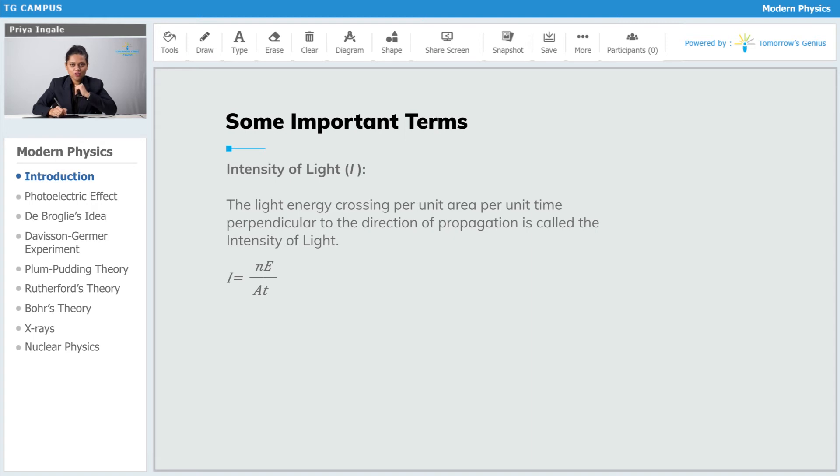The first term is intensity of light. Before going into the definition, let me give you an example. Suppose there is a light of 100 watts. I am considering two areas: first area A, and this one is the second, which is area B.